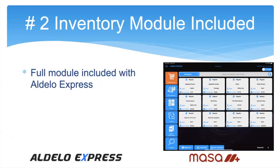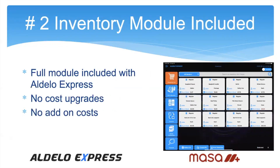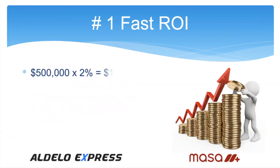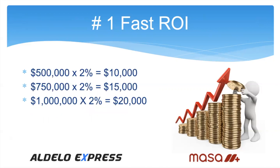Number two: the inventory module is included. The full module is included with the Adelo Express package — nothing else to buy, no cost to upgrade, no add-on cost. Add-ons add cost. No additional modules to buy. And of course the number one reason: it's a very fast ROI. The National Restaurant Association says that moving from manual inventory to a software package like Adelo Express can save an average of 2% of sales — that's $10,000 in additional profit for a $500,000-a-year restaurant, and $20,000 for a $1 million restaurant.